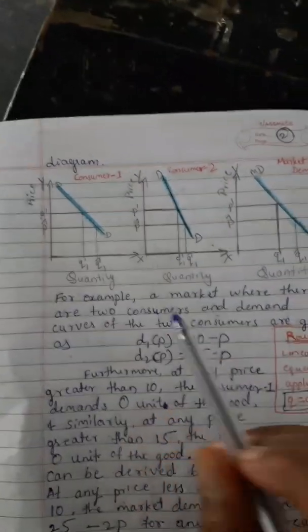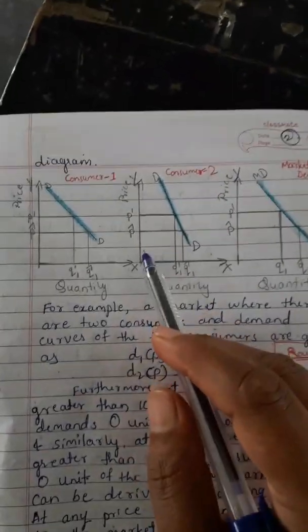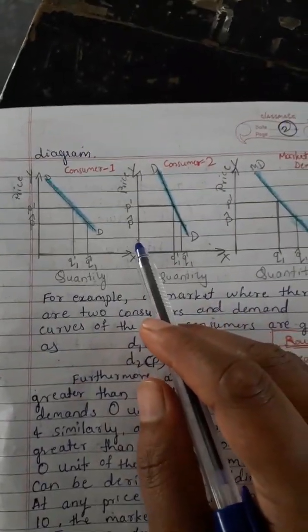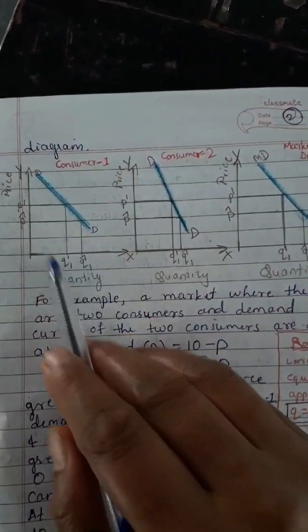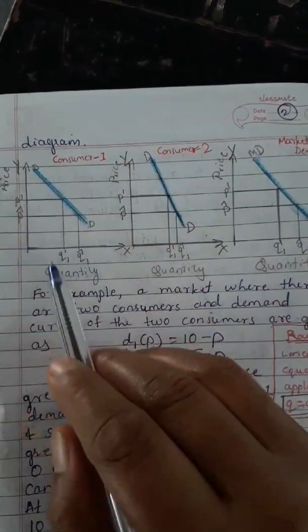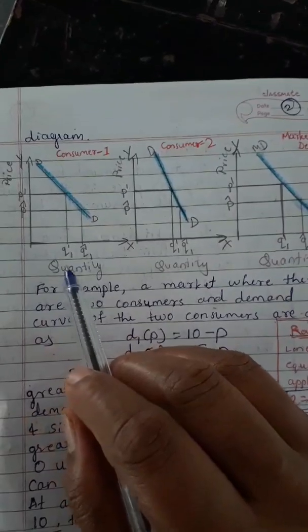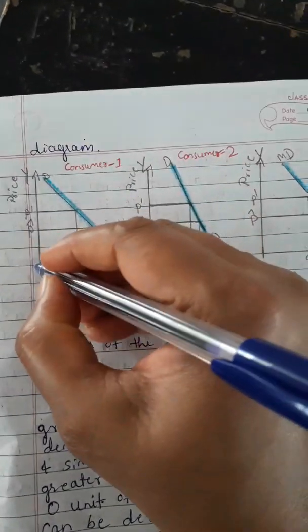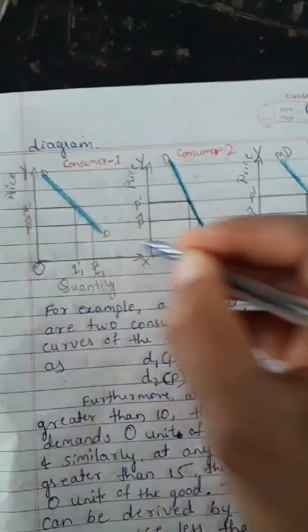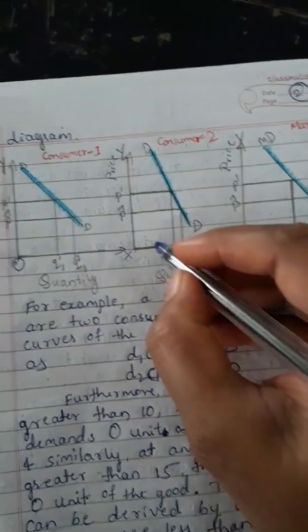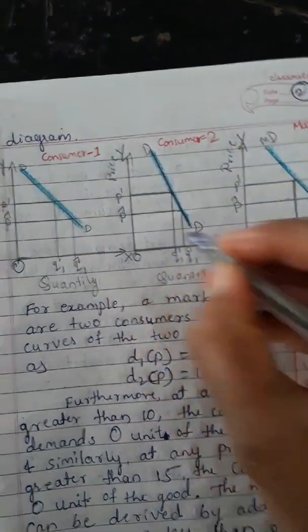Next, we explain this with the help of a diagram. For consumer one, the horizontal axis (OX) represents quantity and the vertical axis (OY) represents price. The same axes apply to consumer two and to the market demand diagram.